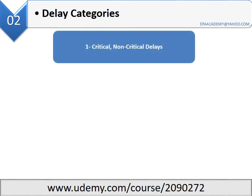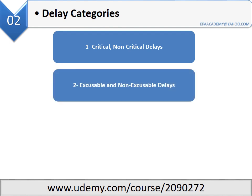Second station: delay categories. One — critical and non-critical delays. The project activities comprising a schedule are two types: critical and non-critical. The non-critical activities have a certain number of days of float, where the activity can be delayed without delaying the whole project.